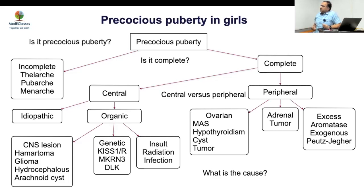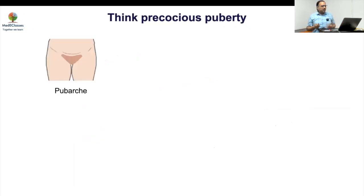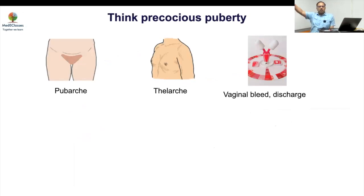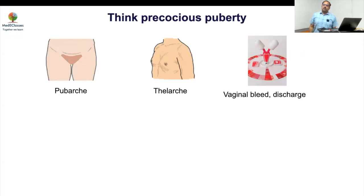The three major presentations of precocious puberty are thelarche, pubarche, and vaginal bleeding. The most common is thelarche, followed by pubarche. Vaginal bleeding is usually combined with others. Other indicators suggesting precocious puberty include change in body odor and rapid height gain — patients often won't volunteer this, but height may have suddenly increased.